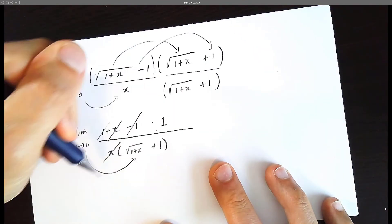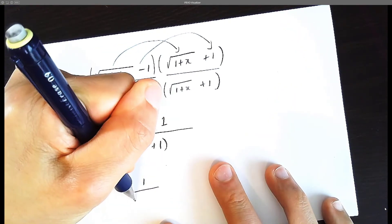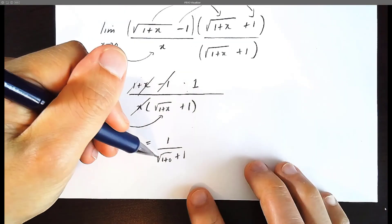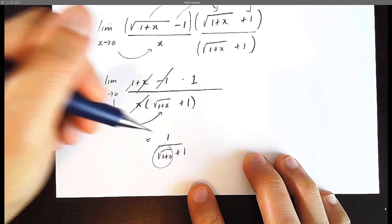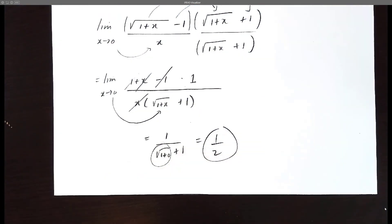So now let's plug in zero substitution. The answer is going to be one over square root of one plus zero plus one. And this happens to be square root of one, which is one. One over one plus one would be one half. So the limit actually does exist.